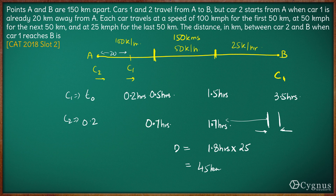Car 2 has traveled only 45 kilometers of the last 50, so the distance remaining for Car 2 is 5 kilometers. The answer is that Car 2 is 5 kilometers away from B.